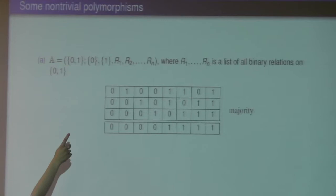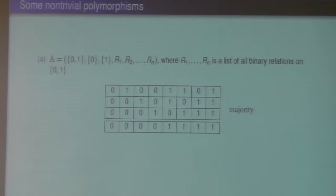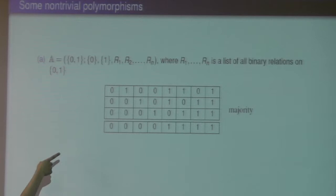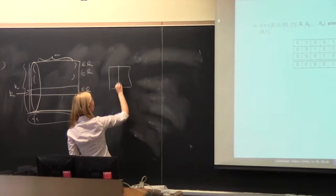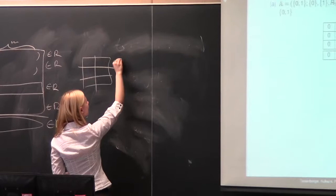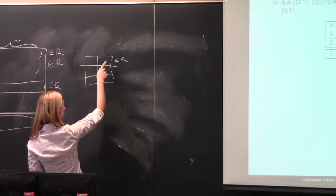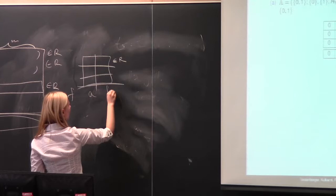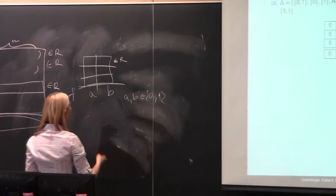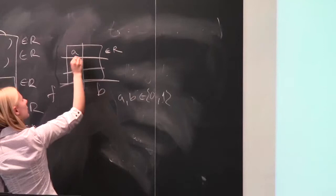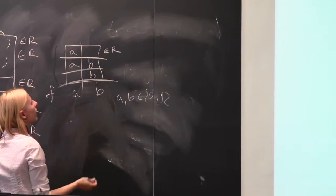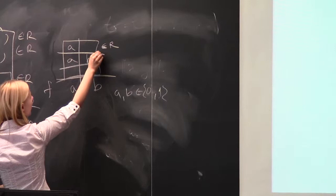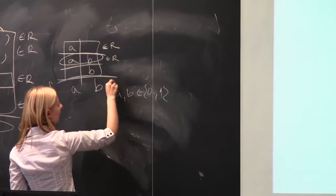I will prove this. First, the majority function preserves {0} because for all-0 columns it assigns 0, and {1} because for all-1 columns it assigns 1. For a binary relation R, we take a 3×2 matrix and apply f. We get some A and B from the universe. If we get A, at least two of the three rows have A in the first position, and similarly for B. By the pigeonhole principle, there must be a row with both A and B, so that row was in R, and therefore the result must be in R too. So the majority function is a polymorphism over all binary relations.